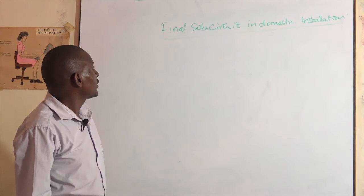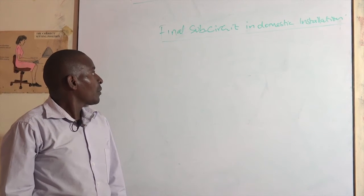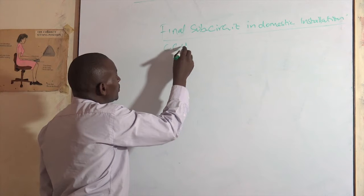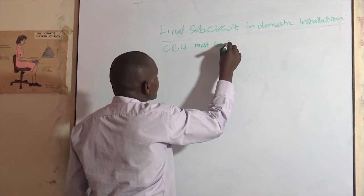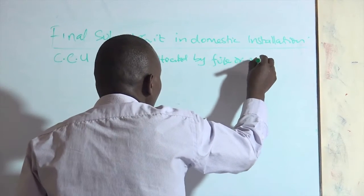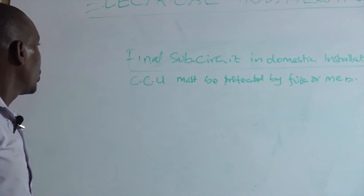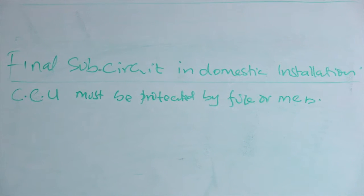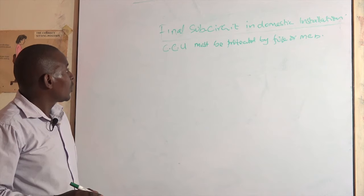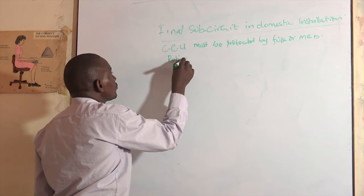From our last discussion we found out that, according to the IEE regulation, all circuits forming part of a domestic installation must start at the CCU and must be protected by a fuse or MCB. What determines the size of the fuse or the MCB is its on-rating.